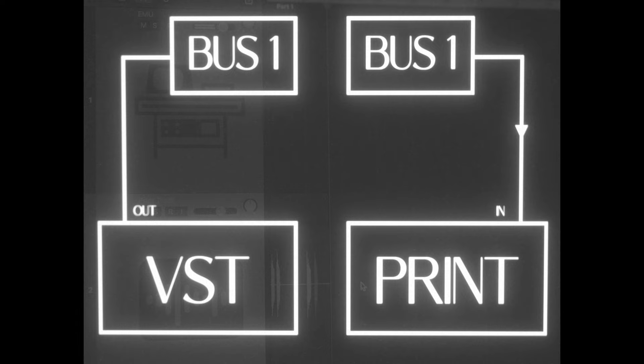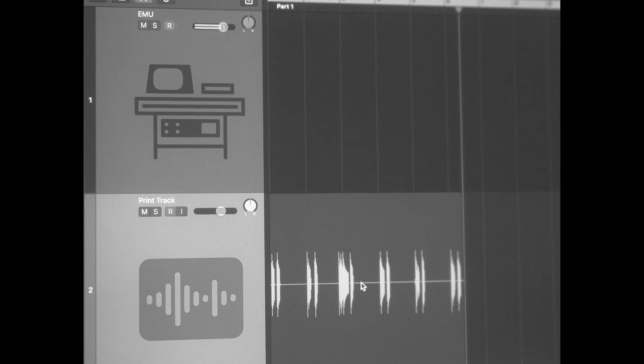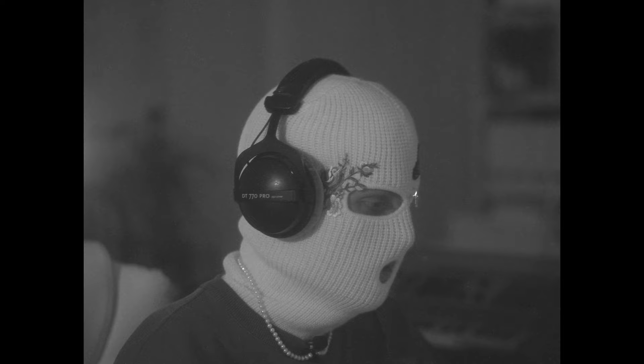Before we get into the synth tracks, I wanted to show you my setup when making beats with virtual instruments. I basically have one track with whatever VST you want to use, and the output is set to Bus 1. Then I have a print track that gets the output from Bus 1 as the input — so I'm not recording any MIDI, I'm only recording the audio that the VST is putting out, basically treating it like a hardware synth.